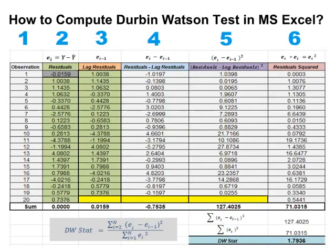How to compute the Durban-Watson test in MS Excel. In step 1, all 20 observations are given. In step 2, copy the computed residuals from MS Excel. In step 3, copy the lag residuals. In step 4, subtract the lag residuals from the residuals.